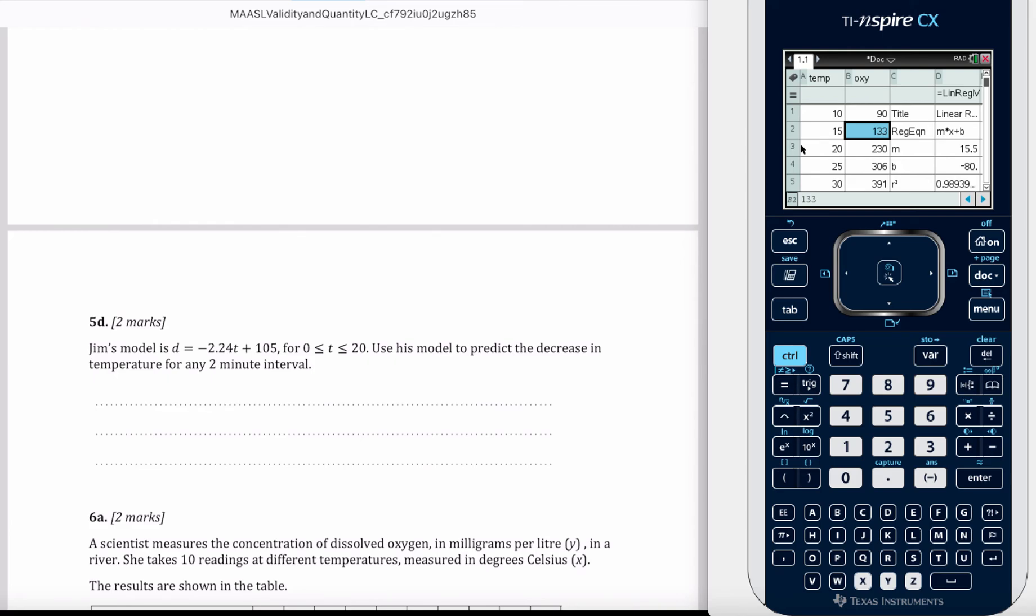How much is it decreasing per minute? That's here. So it's minus 2.24 degrees per minute, degrees C per minute. So if we're after a 2-minute interval, we have negative 2.24 times by 2, so that's negative 4.48.